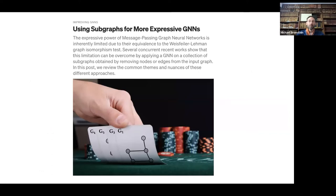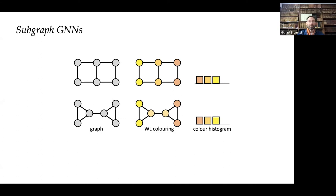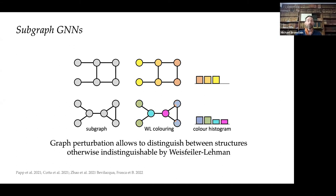This direction gave rise to subgraph GNNs. For non-isomorphic graphs that produce the same WL coloring, if we perturb the graph by removing an edge, this removal makes the WL coloring different, allowing us to distinguish them. This explains why dropout techniques such as node or edge dropout work — it was proven, in a paper by Papp from ETH Zurich, that dropout makes GNNs strictly more powerful than WL. A paper by Leonardo Cotta linked this to reconstruction conjectures.